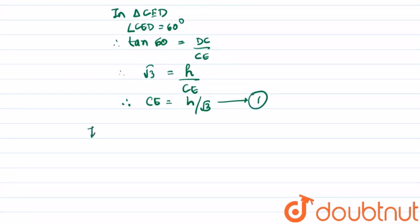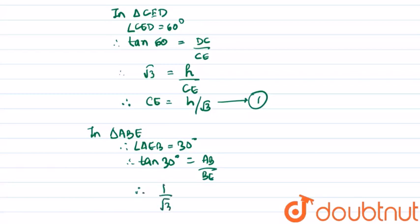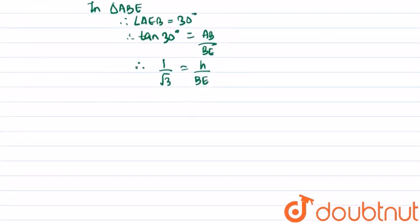In triangle ABE, angle AEB is 30 degrees. Therefore tan 30 degrees equals AB upon BE. Therefore 1 upon root 3 equals height AB upon BE. Therefore we found that BE is h root 3.